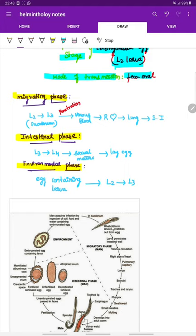In the migrating phase, the L2 from the egg is released in the duodenum where it matures into L3. The L3 penetrates into the venous blood, into the right heart, and from the right heart into the lung, and from the lung into the small intestine. This is the migrating phase.